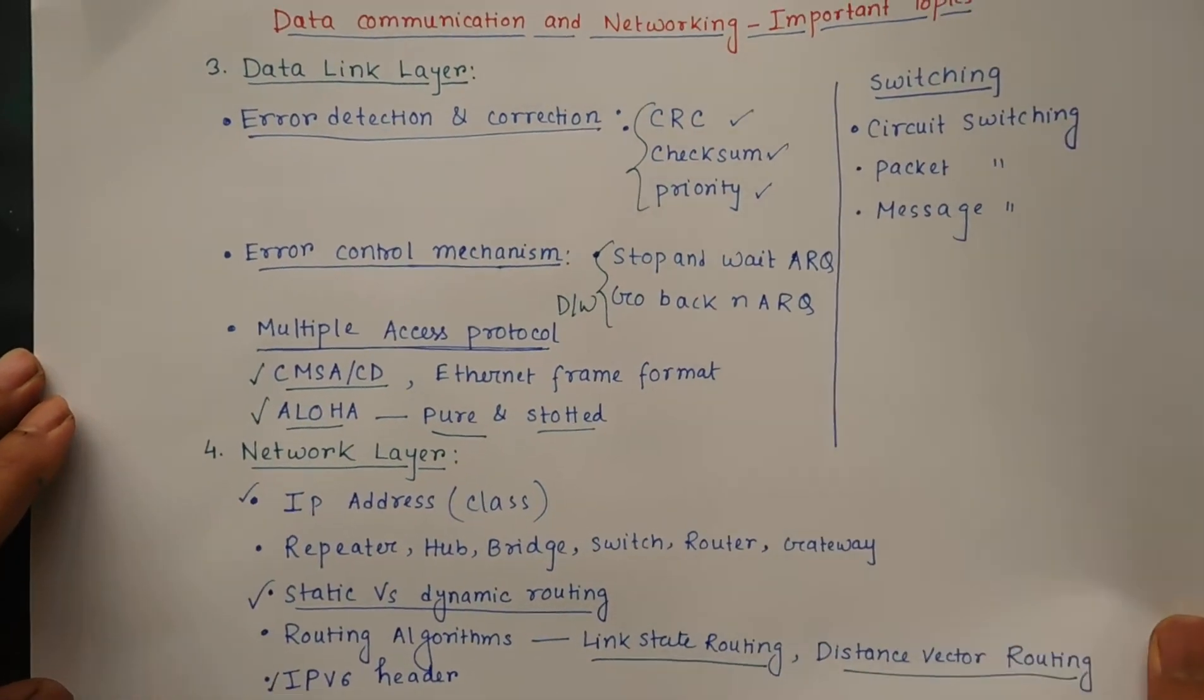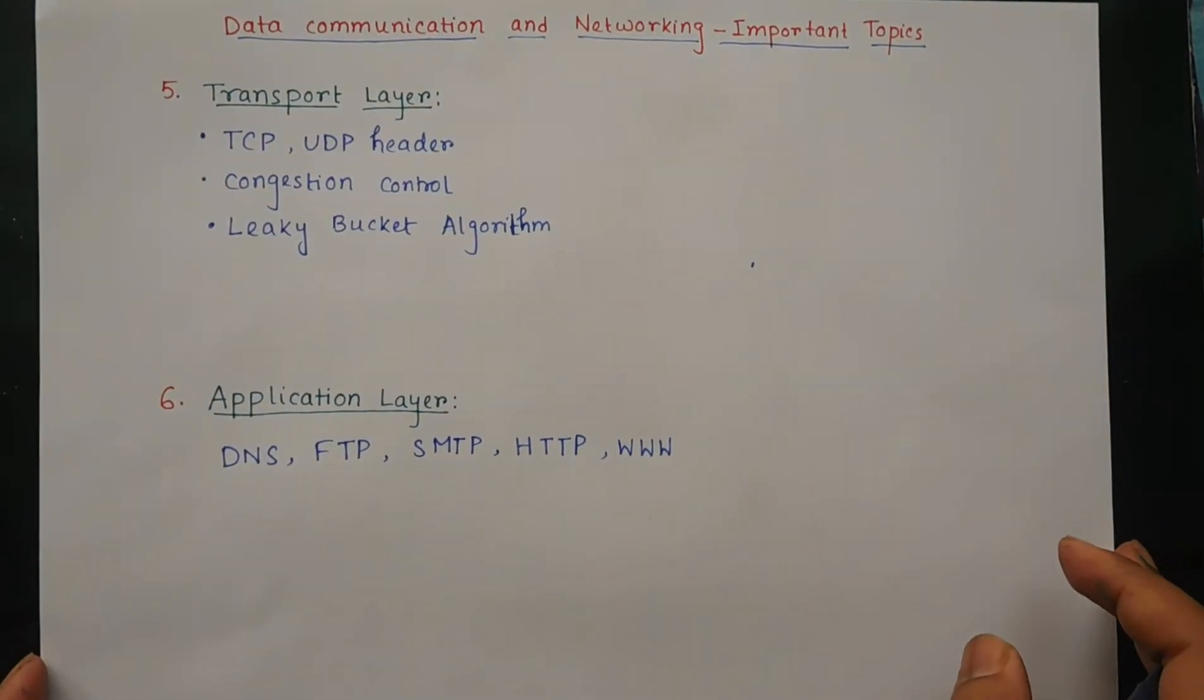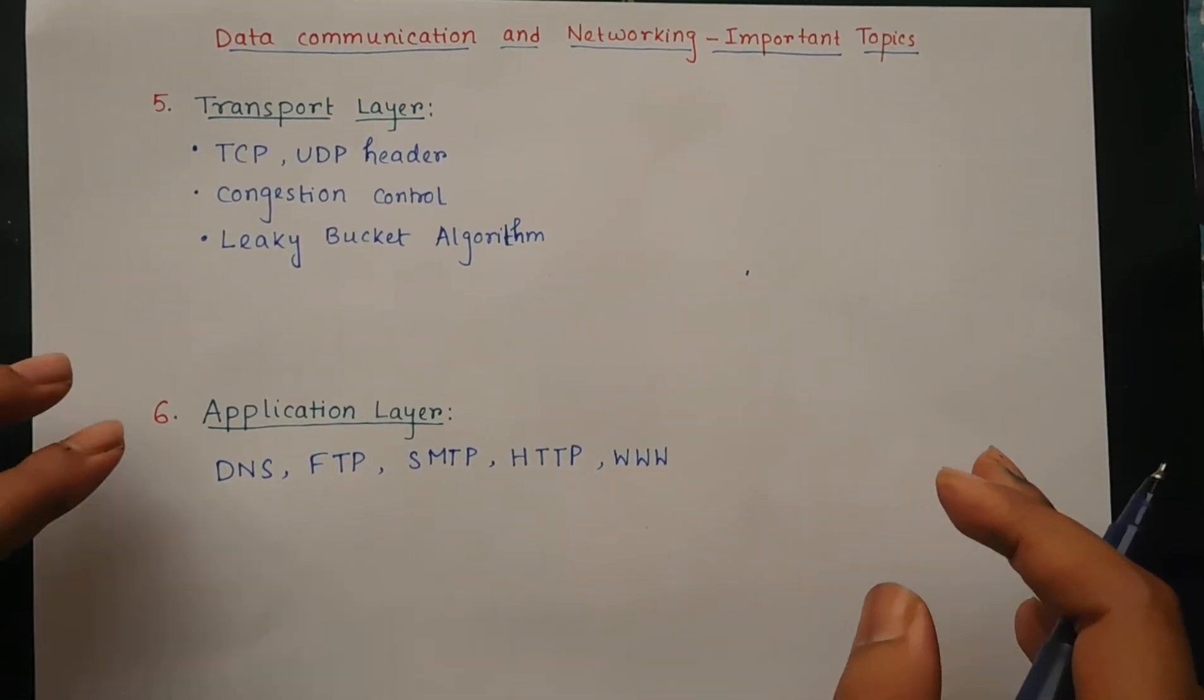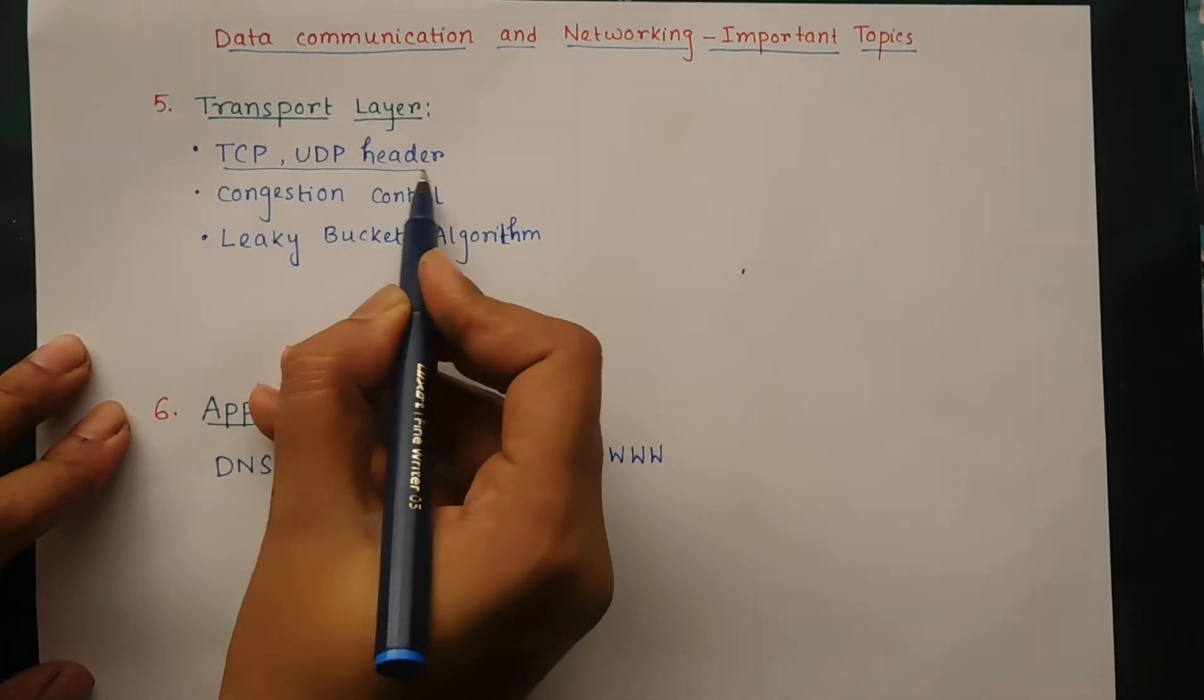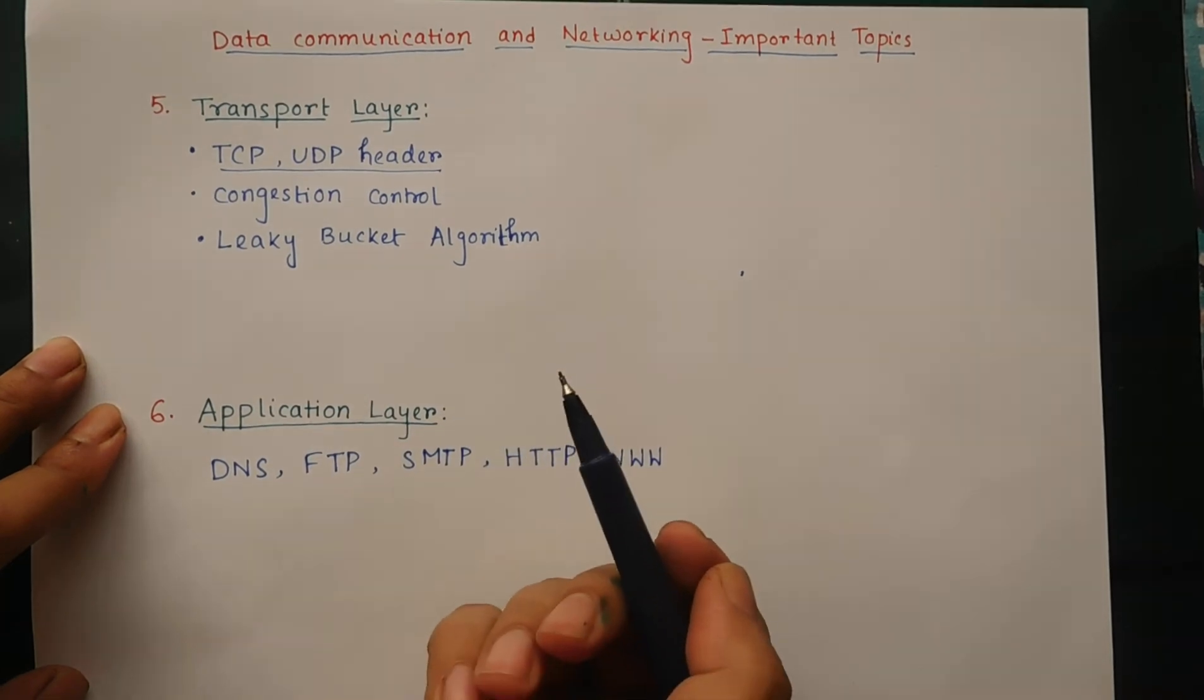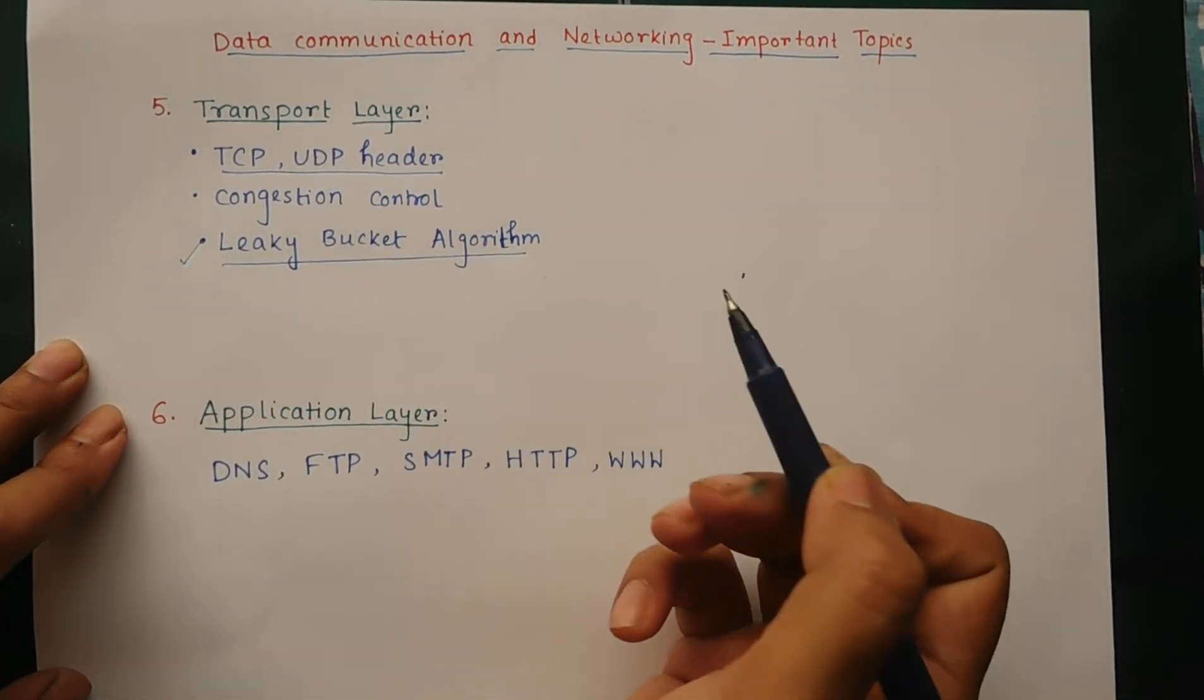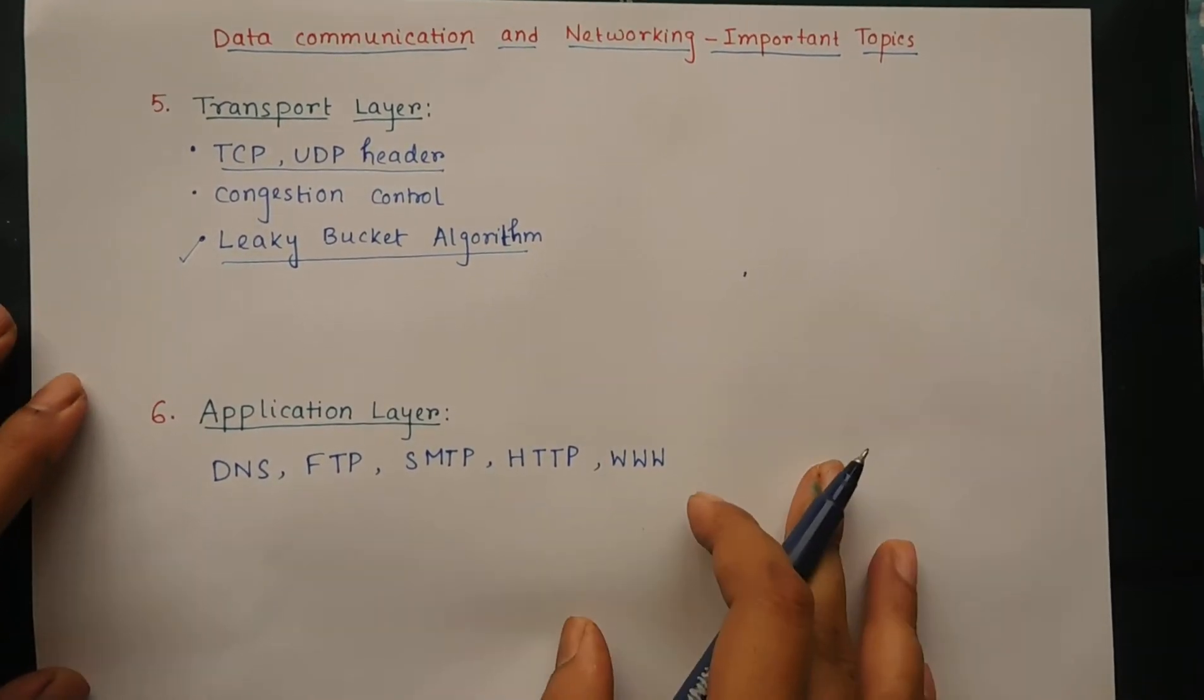The next layer is transport layer. Here you read the TCP and UDP headers, then congestion control. The algorithm is leaky bucket algorithm. So you have to read all this in transport layer.